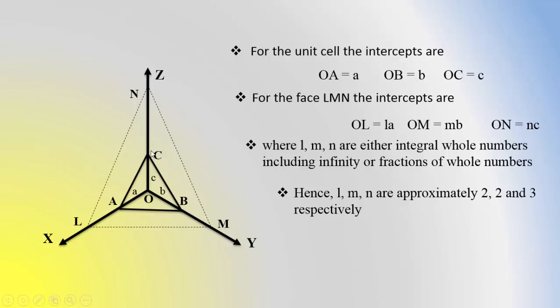but it is approximately 3 times for the Z axis. So its ratio is written as 2:2:3, and this is known as axial ratio, also called ratio of intercepts.